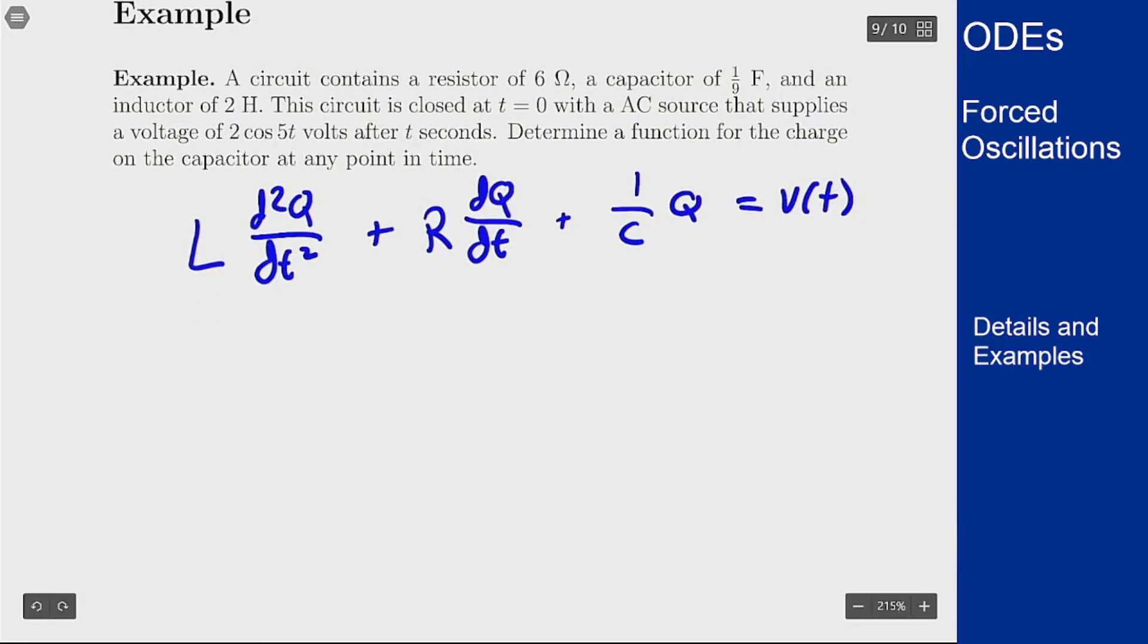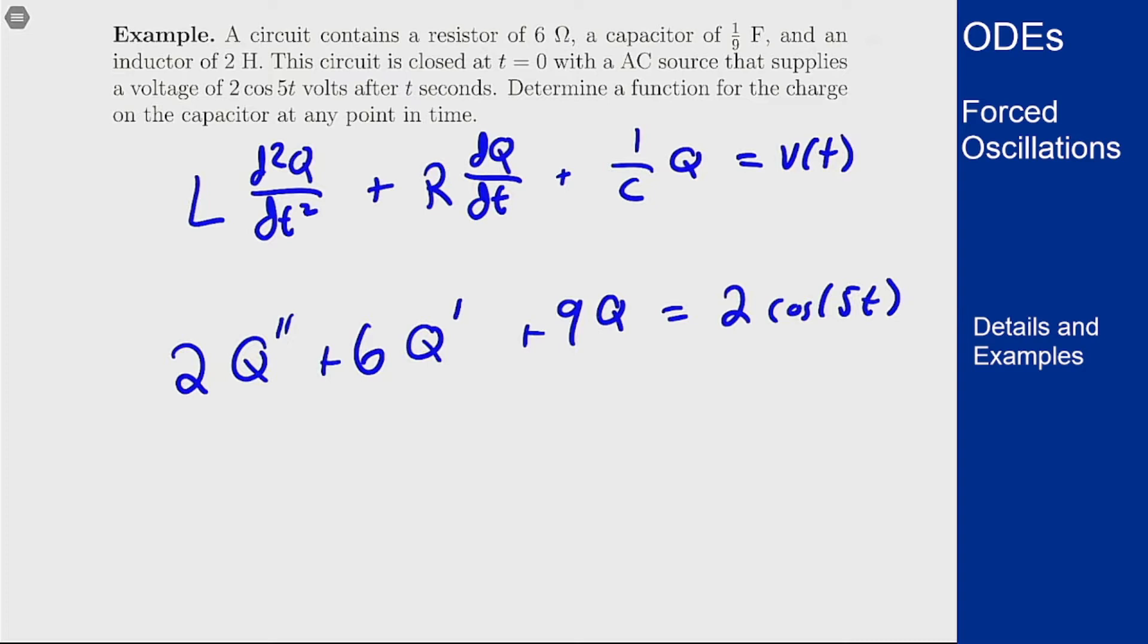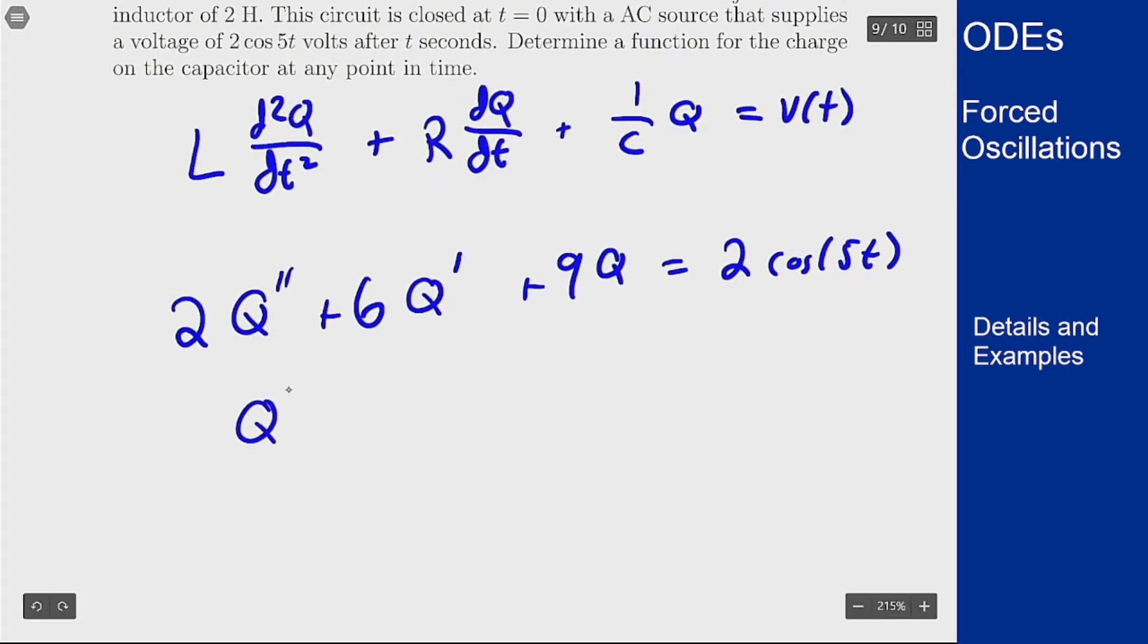We know that the inductance is 2 henrys, so 2 q double prime. The resistor is 6 ohms, plus 6 q prime. The capacitance is 1/9, so this is 9q equals our applied voltage 2 cosine of 5t. To make it easier, I'm going to divide through by 2 to solve for q. So q double prime plus 3 q prime plus 9/2 q equals cosine of 5t.